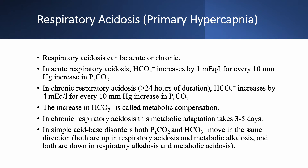Respiratory acidosis can be acute or chronic, and the compensation is different. In acute respiratory acidosis, bicarbonate increases by 1 mEq/L for every 10 mmHg increase in PaCO2. In chronic respiratory acidosis — acidosis lasting more than 24 hours — bicarbonate increases by 4 mEq/L for every 10 mmHg increase in PaCO2. This increase in serum bicarbonate is called metabolic compensation, and in chronic respiratory acidosis it takes three to five days to take full effect.